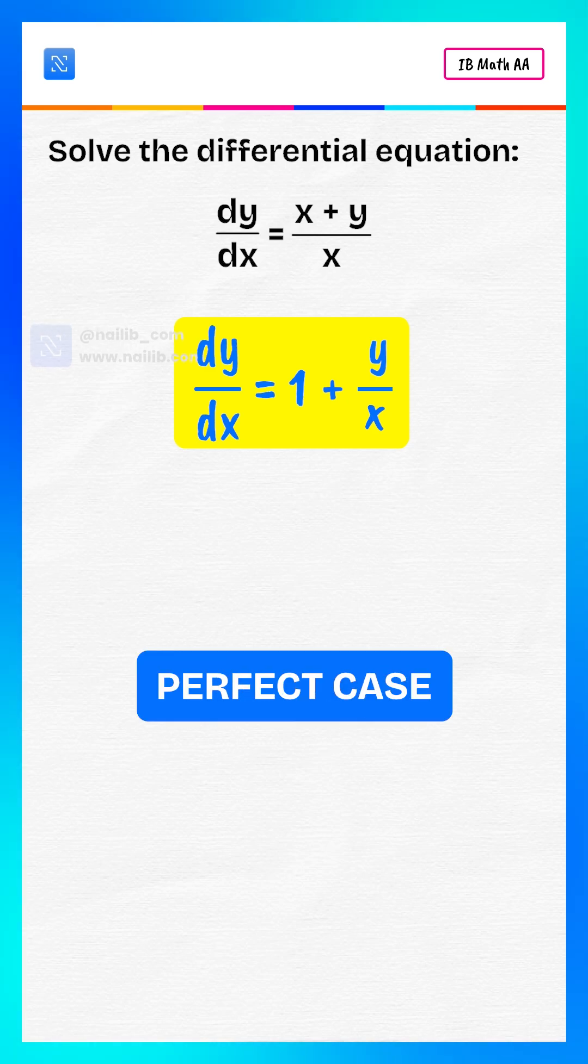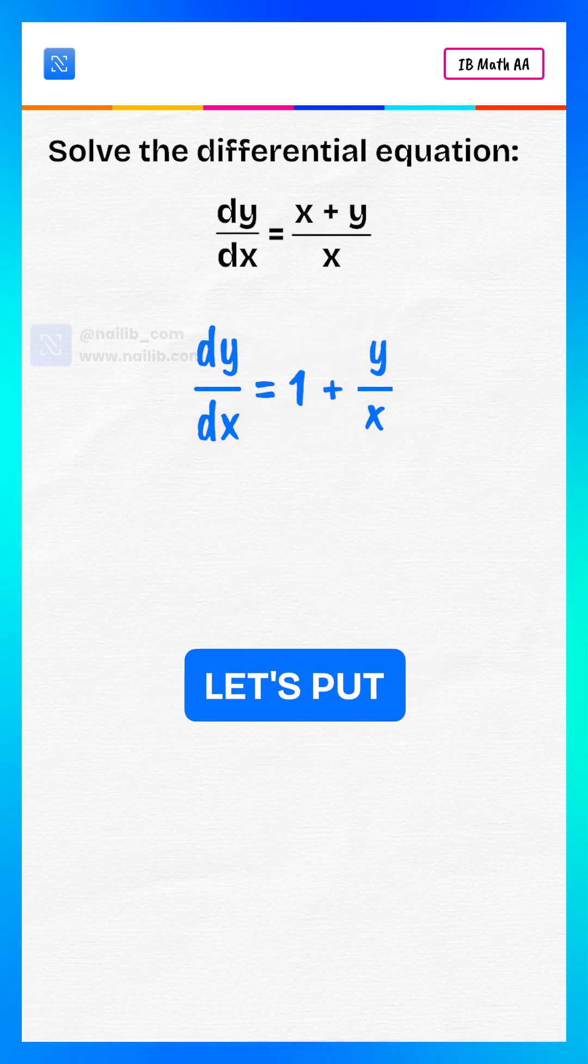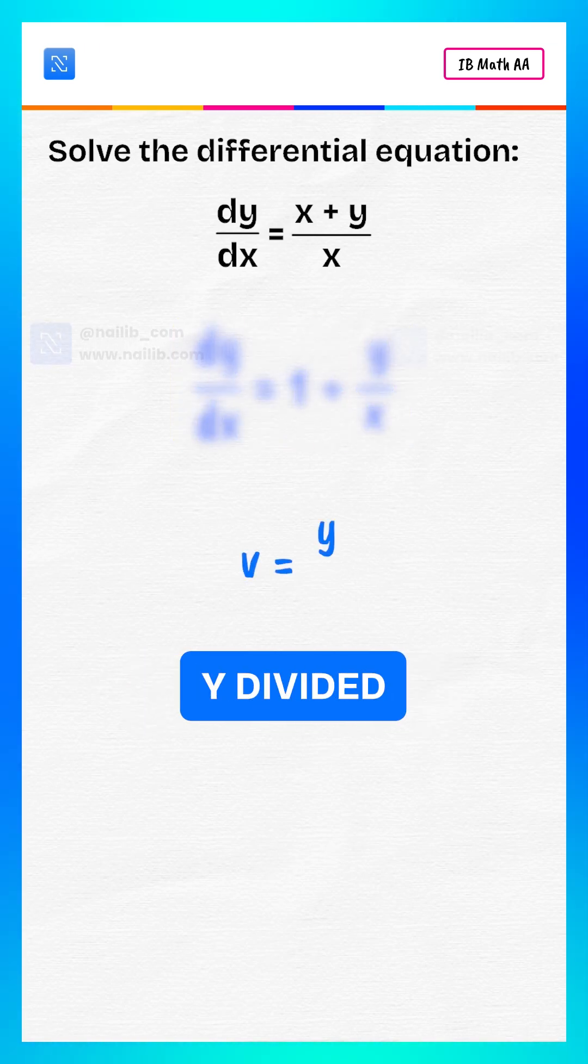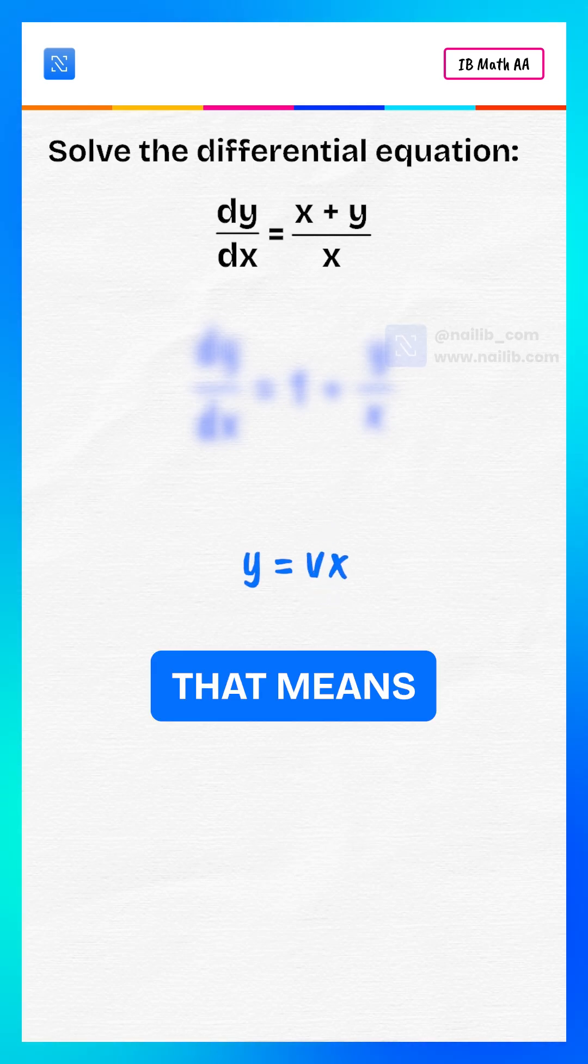Now this looks like a perfect case for substitution. Let's put v equals y divided by x. That means y equals v times x.